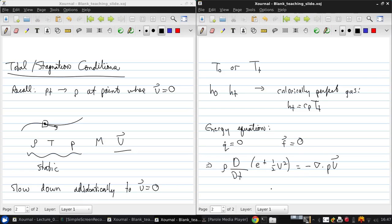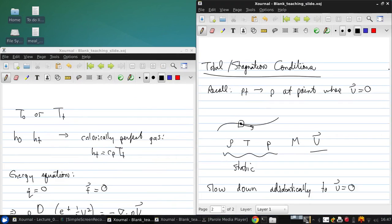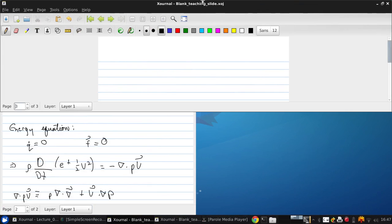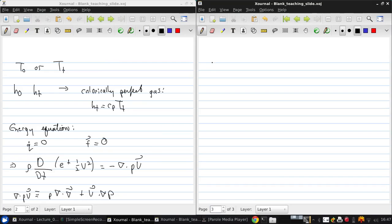Now if we manipulate the right-hand side with the following vector identity, then what we can get by recalling continuity, which is d rho dt plus rho grad v equals zero, and if we also use that rho times the substantial derivative of p over rho is dp dt minus p over rho d rho dt, and if we put this definition of d rho dt in here and put it all together into a single equation, what we get is this.